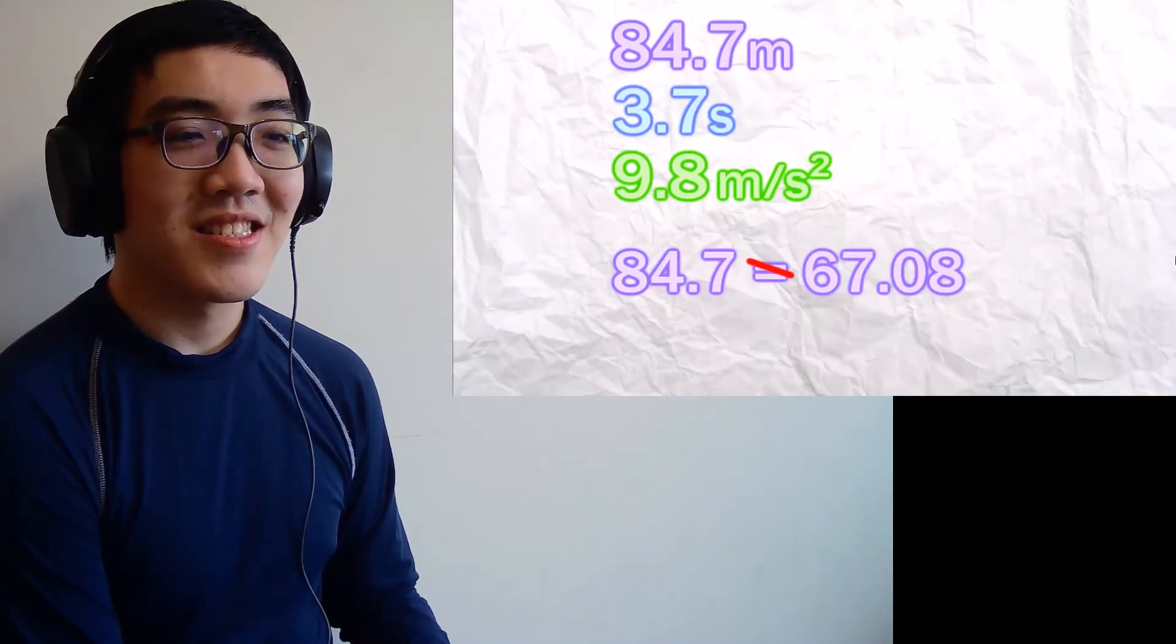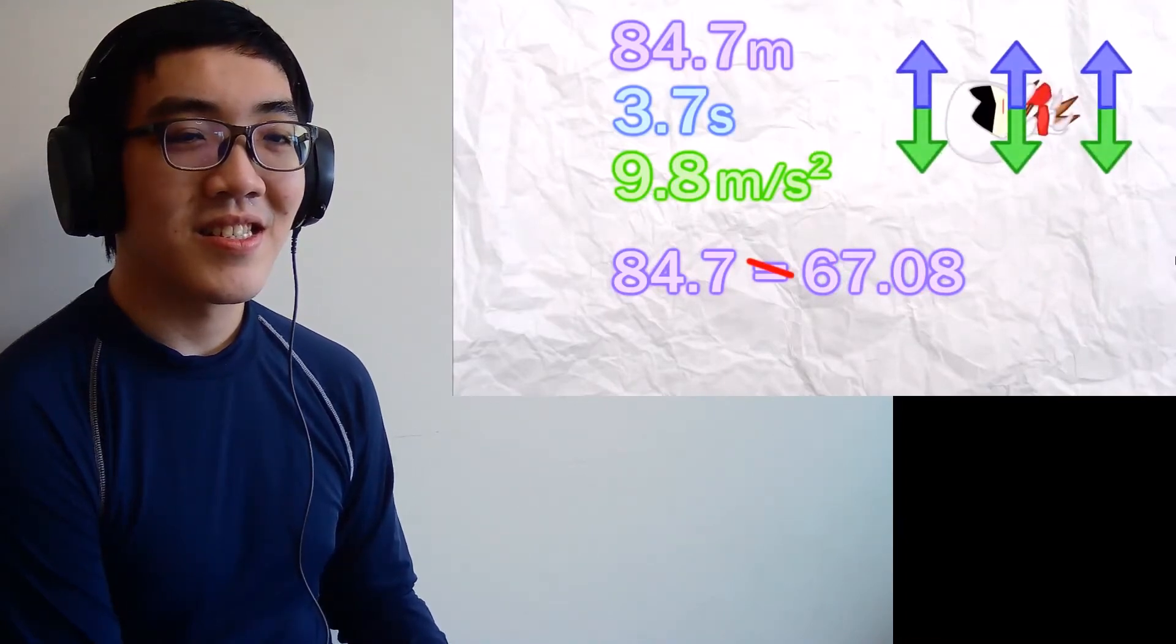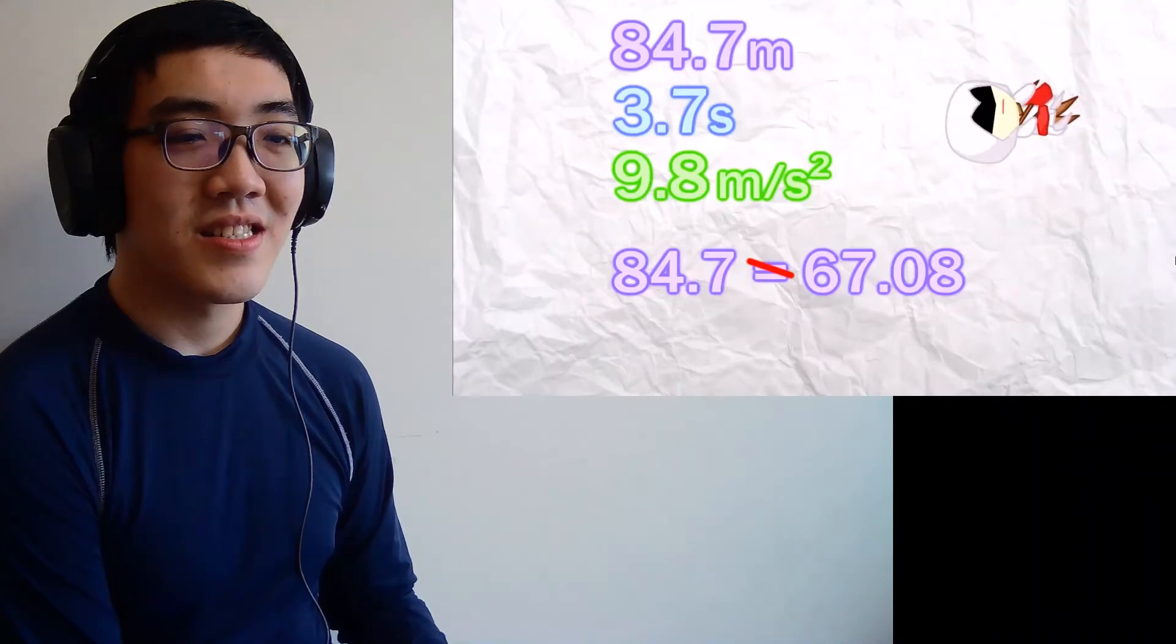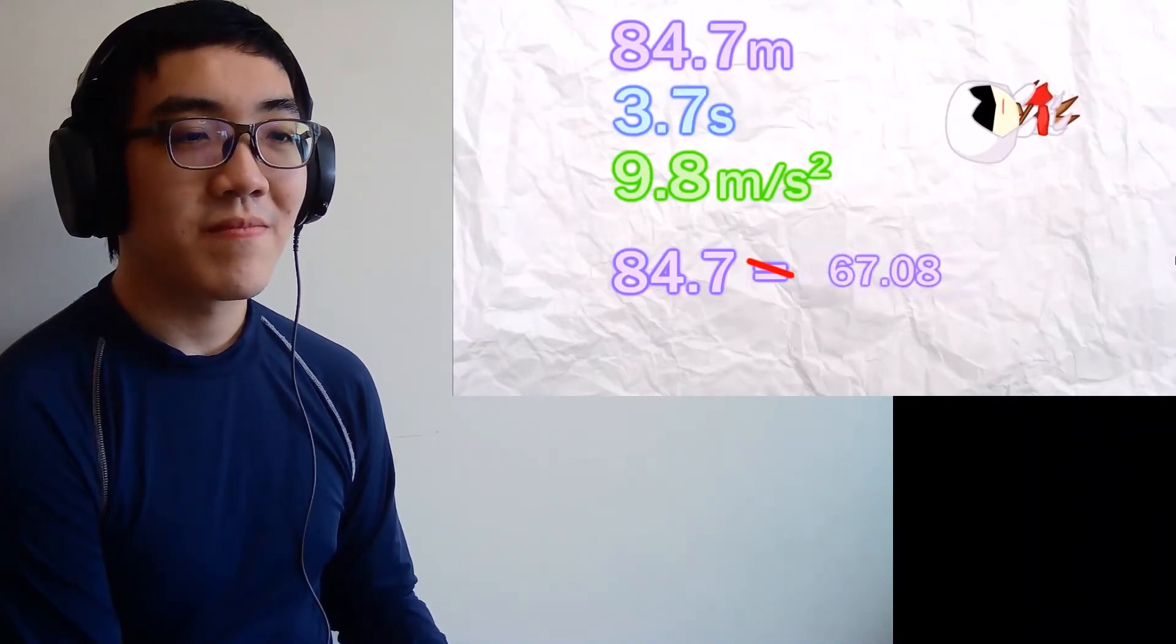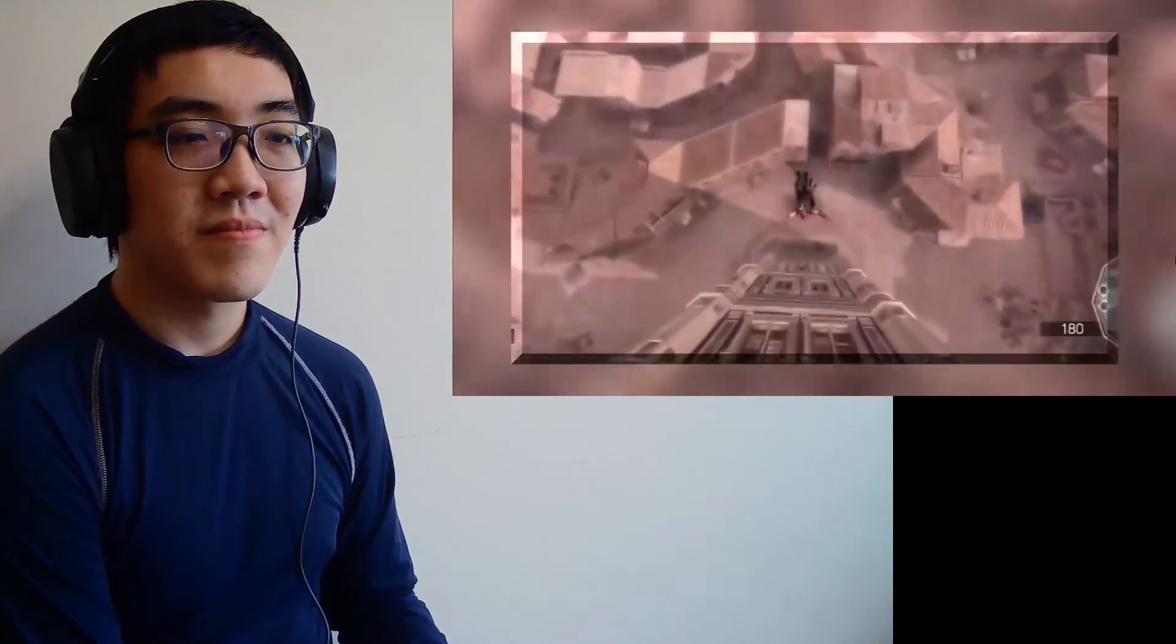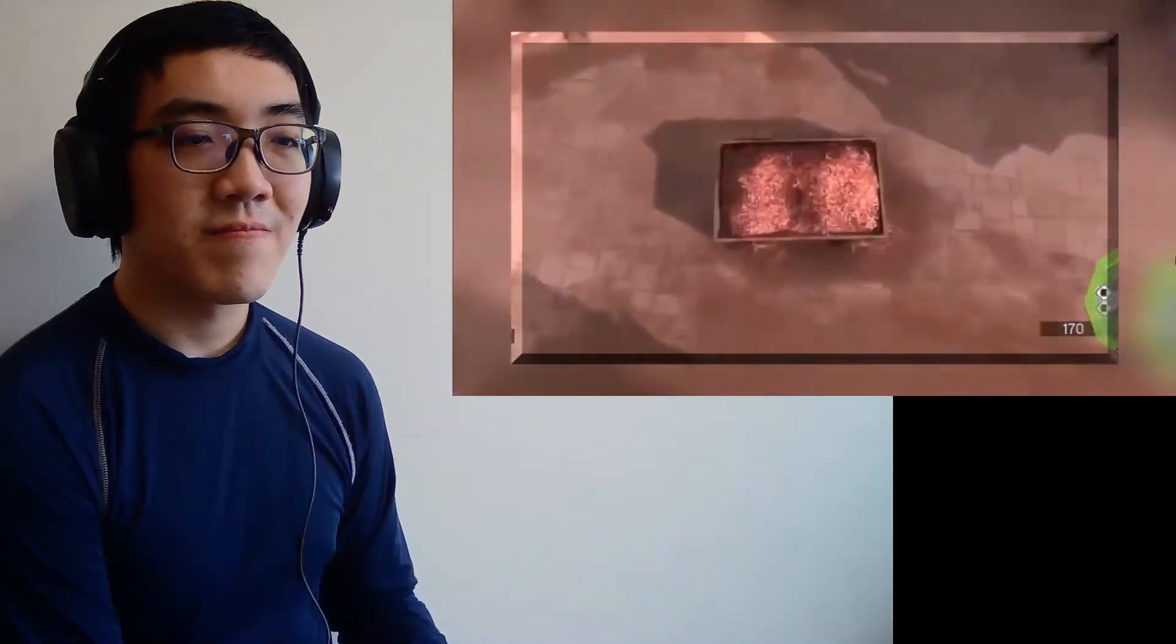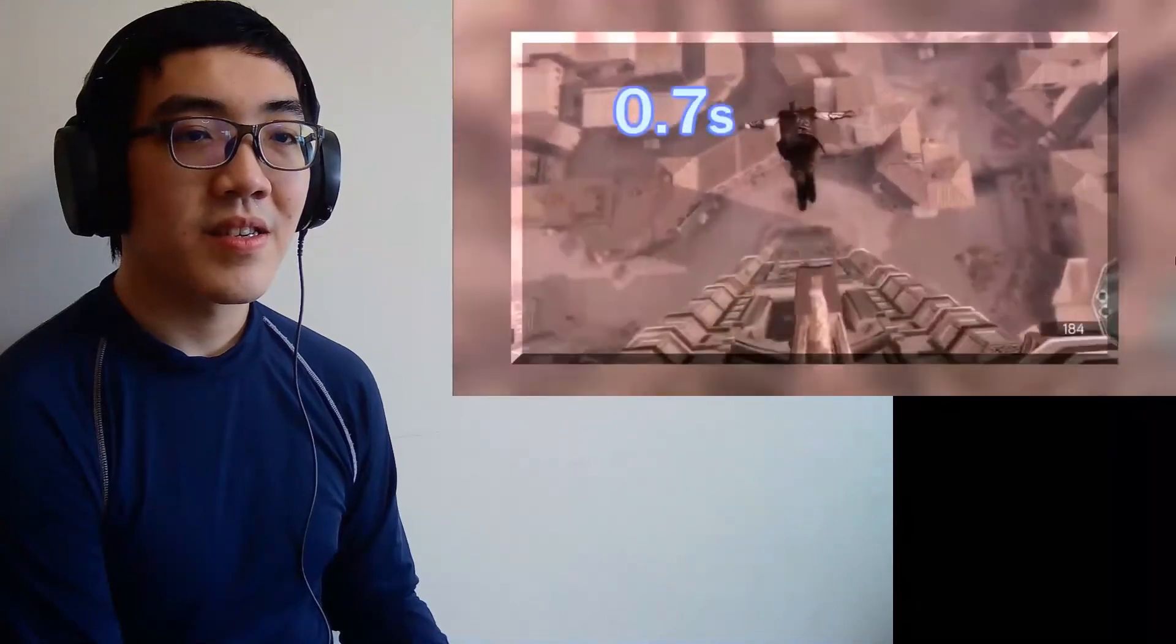The equation should balance. Of course, we're not factoring in wind resistance, but that would make Ezio fall even slower, thus making this side of the equation even less. But we know that both the time of the fall and height of the building must be correct. The building is clearly identified in the game and the time we just measured.